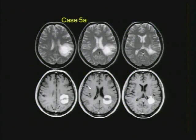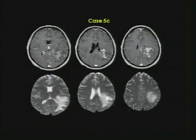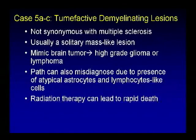These three patients had masses with incomplete rim enhancement, a little edema, and minimal mass effect. All three went to surgery for presumed aggressive high-grade glioma and turned out to have demyelinating lesions. These lesions should not go to surgery — or at most, limited biopsy. Think TDL: tumefactive demyelinating lesions.